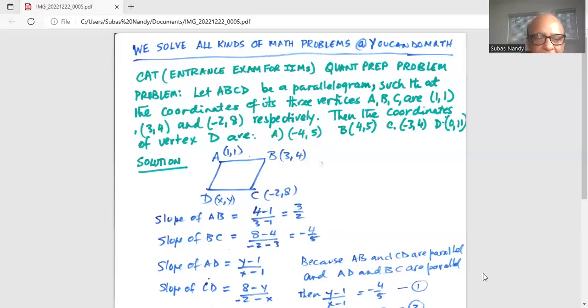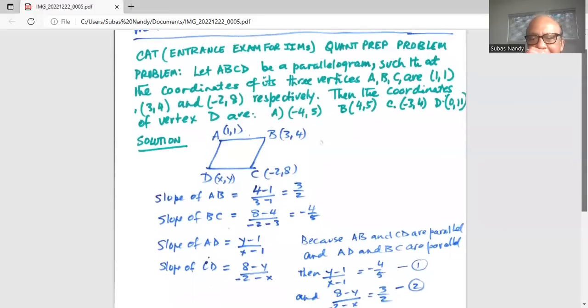Now slope of the line AD is change in y divided by change in x, is (y-1) divided by (x-1). And slope of the line CD is (8-y) divided by (-2-x). Change in y divided by change in x. Because AB and CD are parallel, and AD and BC are parallel, the slopes must be equal.